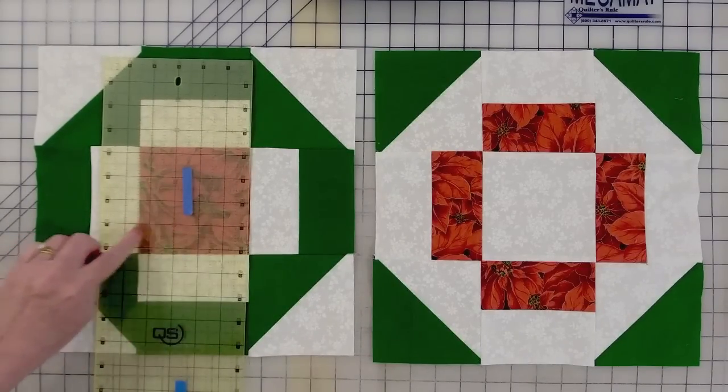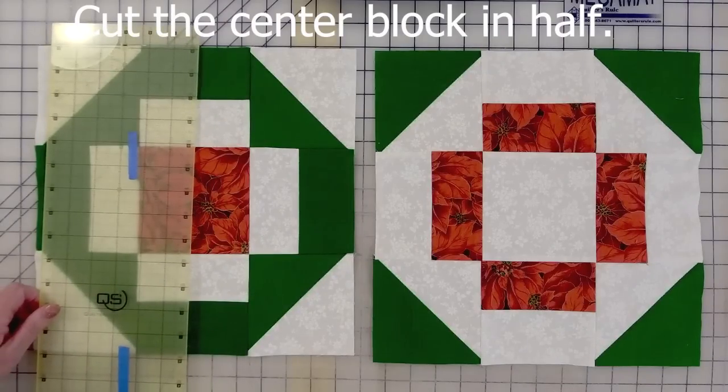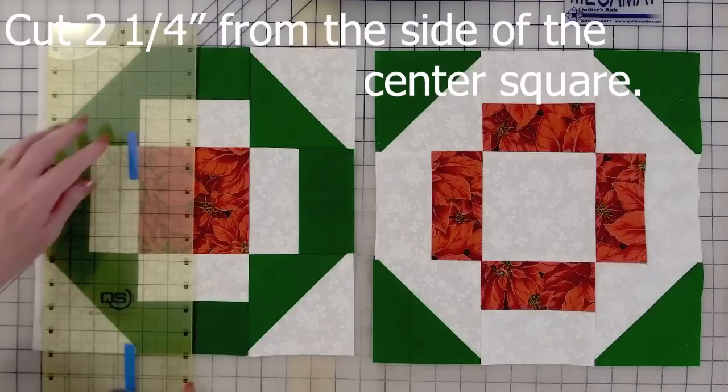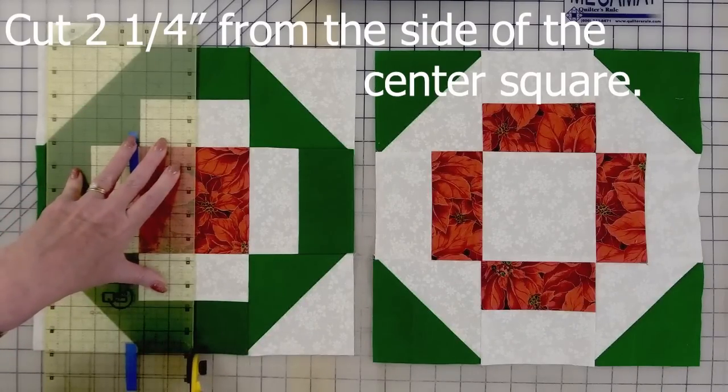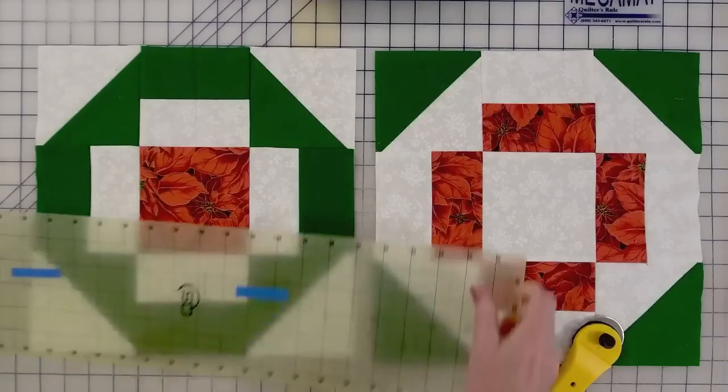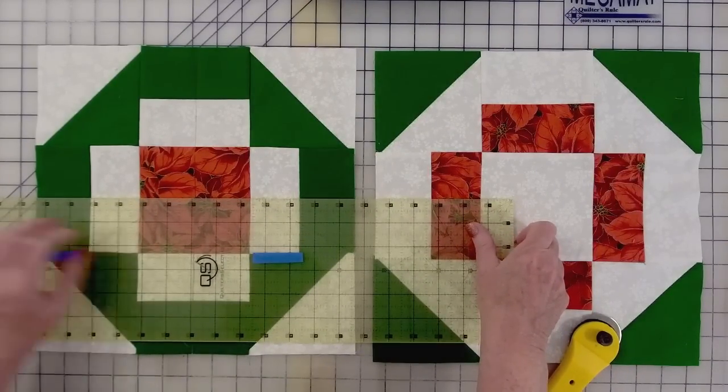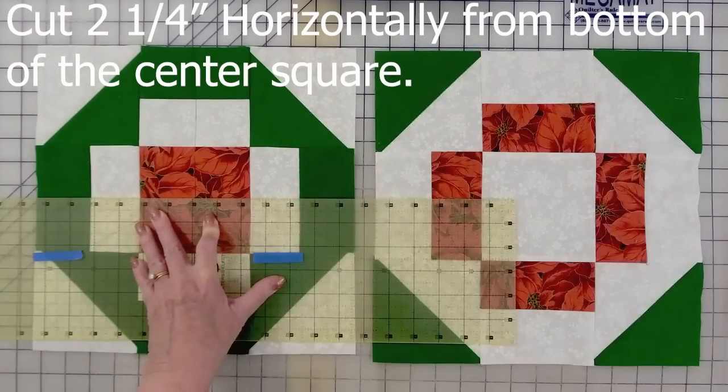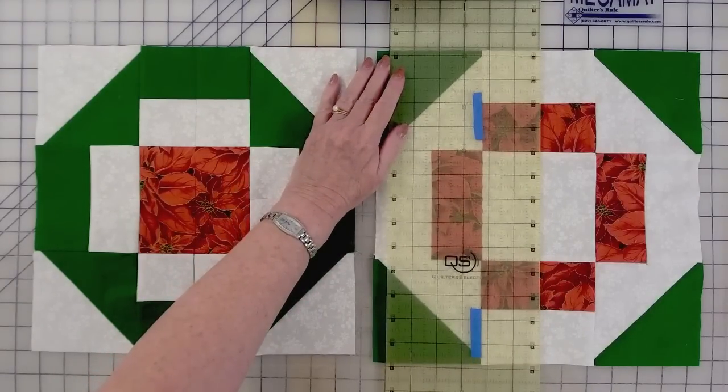You take this middle section, and you measure it, in this case, four and a half. And then we divide that by two, so that's two and a quarter. So we measure two and a quarter inches from this seam here. So we make one vertically, and one horizontally. This will make four even pieces. We do the same thing to the negative Grecian square, two and a quarter.